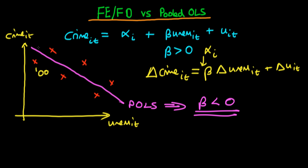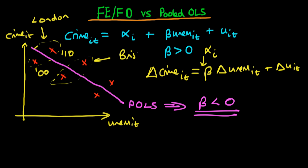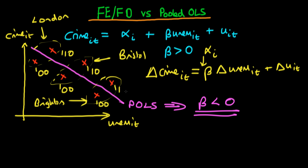Implicit in this approach is that we treat observations from different cities differently — we consider within a city what the change in crime rate has been between periods. For example, the top two observations might correspond to London in 2000 and 2010, the middle two to Bristol in 2000 and 2010, and the bottom two to Brighton in 2000 and 2010.